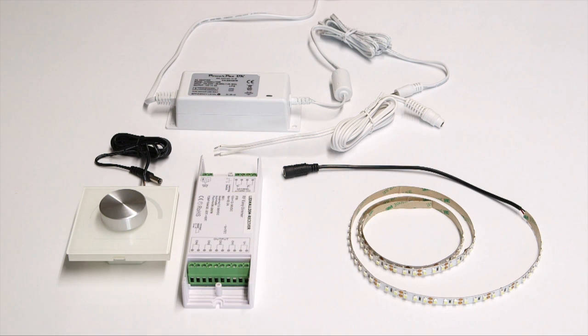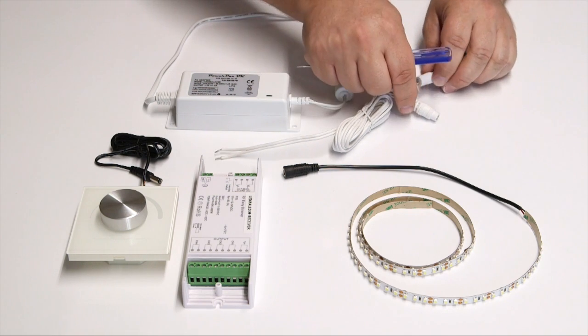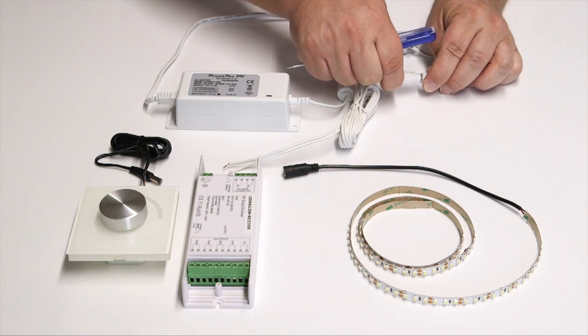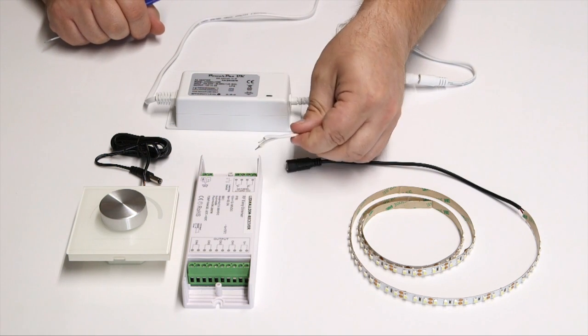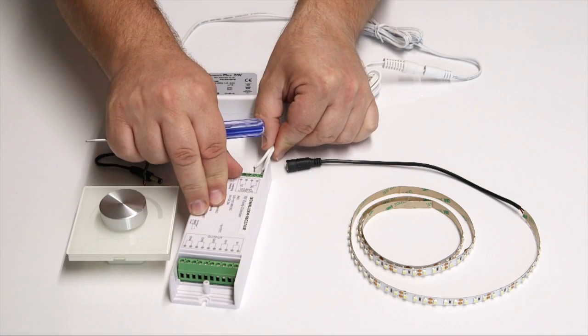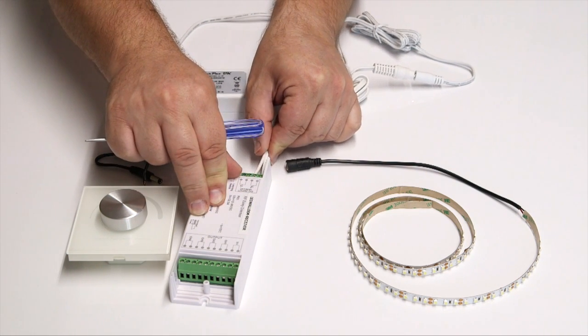Next, connect the power supply which is fitted with the C4229D output cable into the LED wall dim receiver unit, where you can see we have removed the input and output covers.